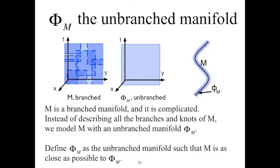In the diagram on the right, we see a lower dimensional example where M is a branched 0+1 manifold, and there are so many branches that it is depicted as a thick blue line, where that line consists of many separating and recombining branches. Then Φm is the unbranched manifold, which is the dark line at the center. Because the branches of M tend to stay close to each other, it makes sense to approximate those branches with an unbranched manifold.